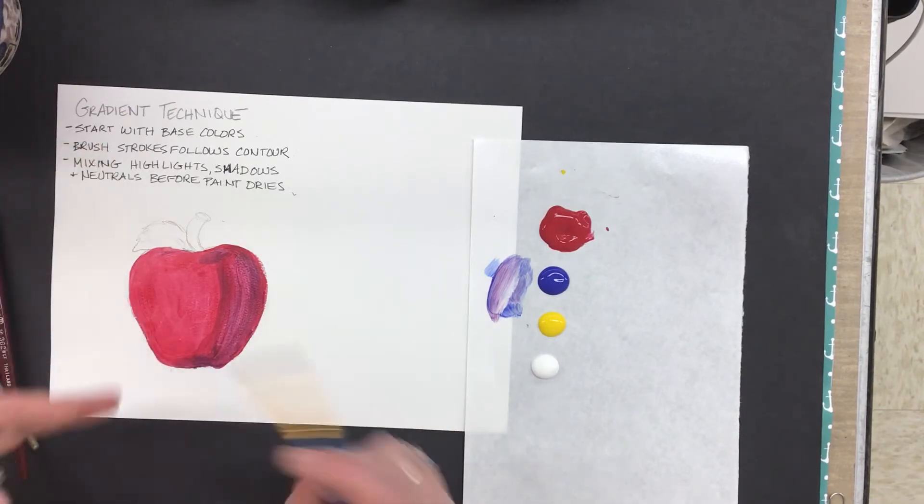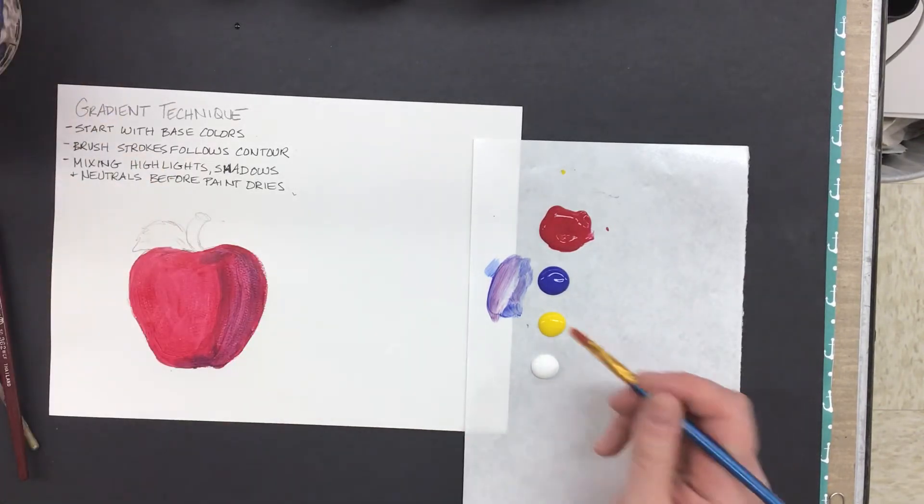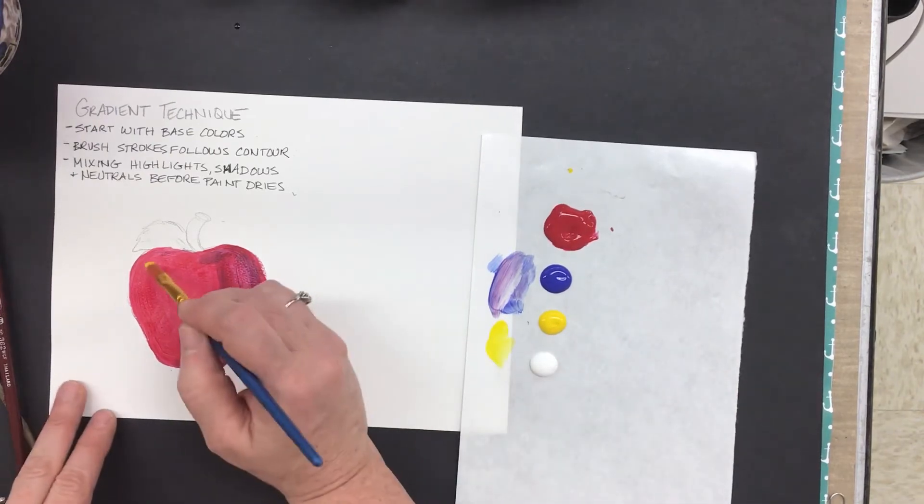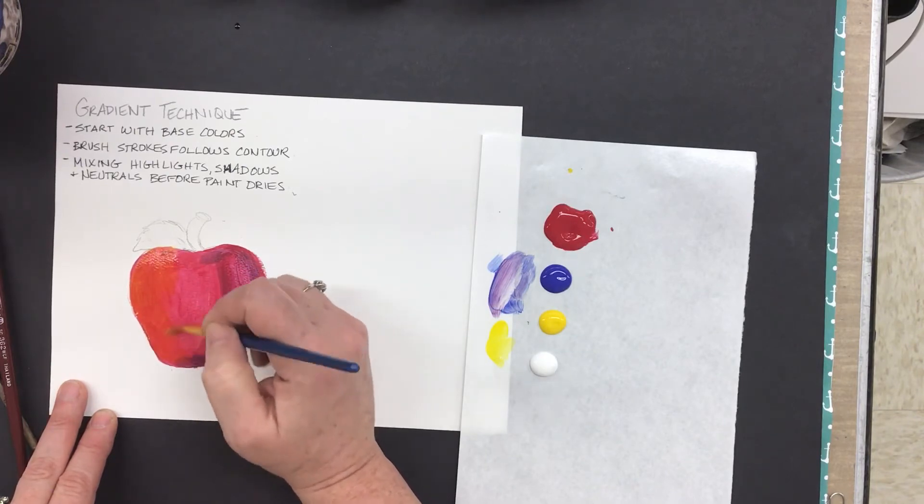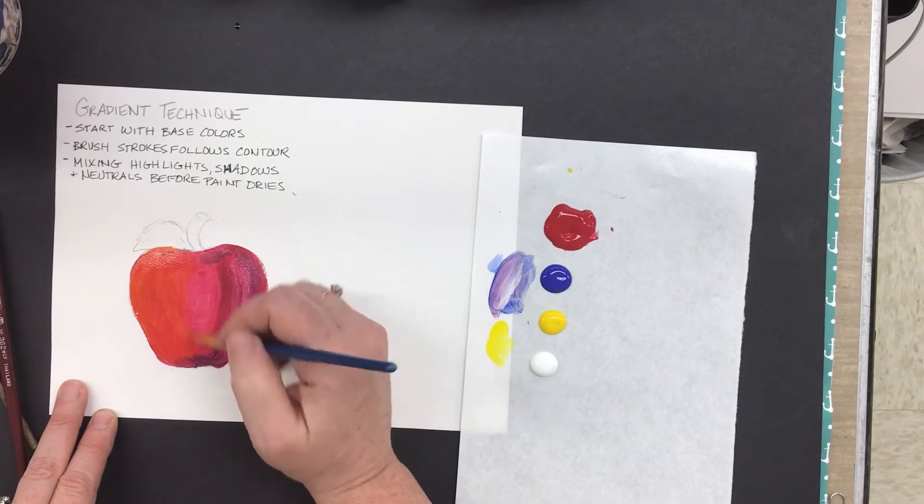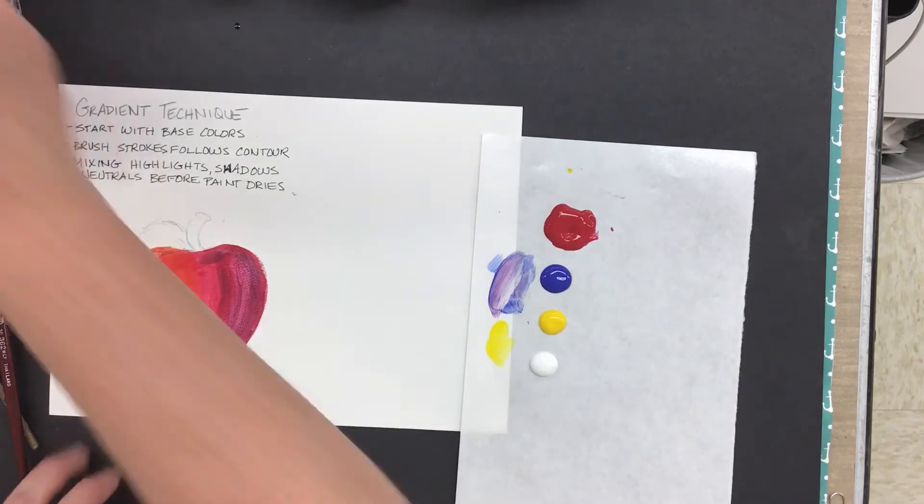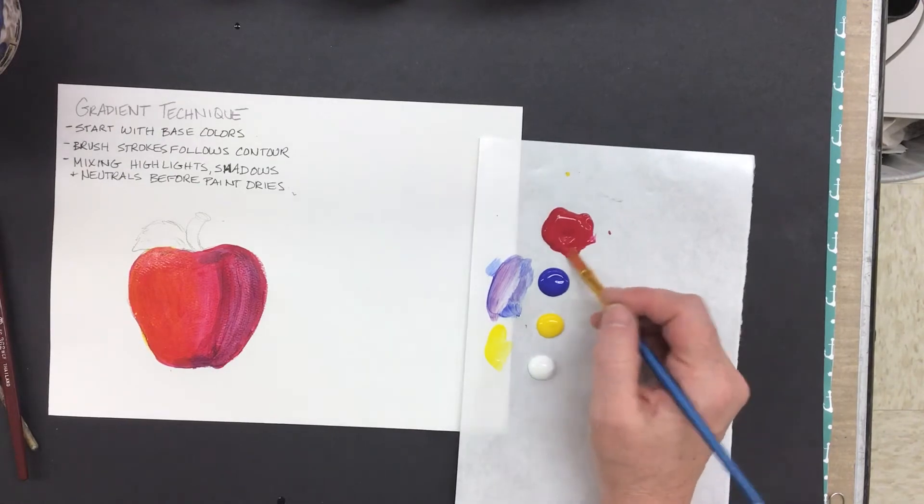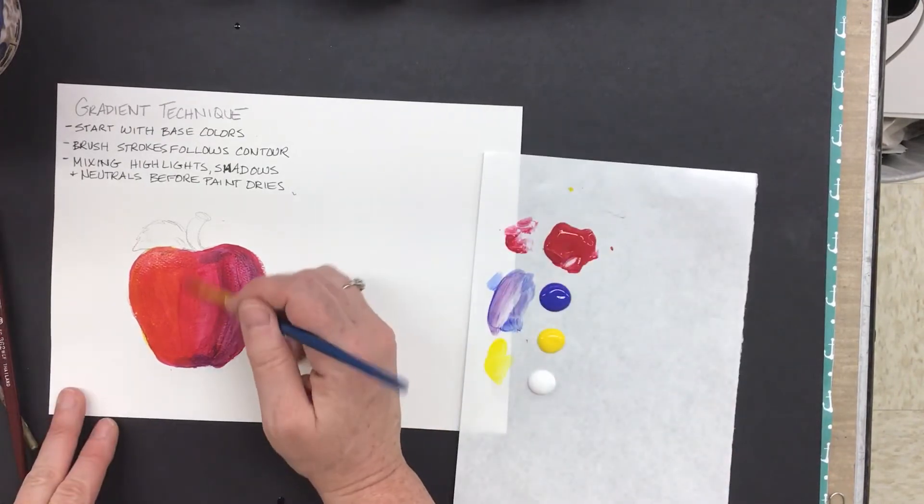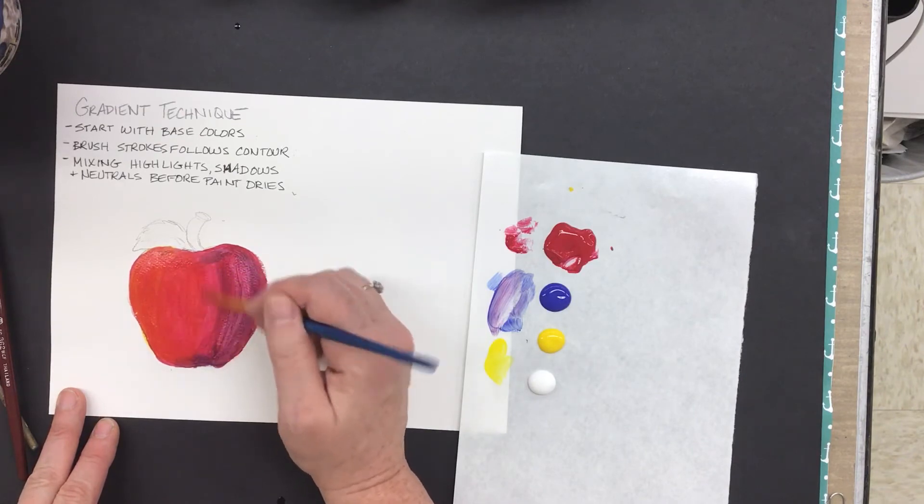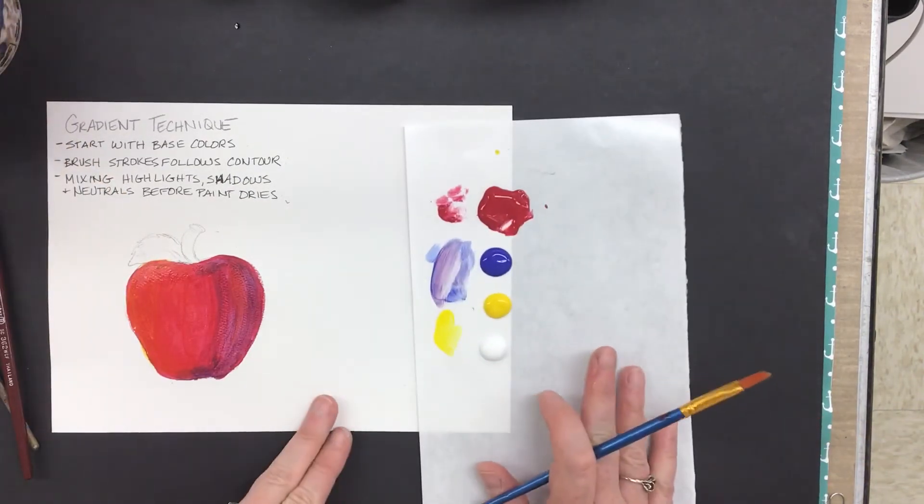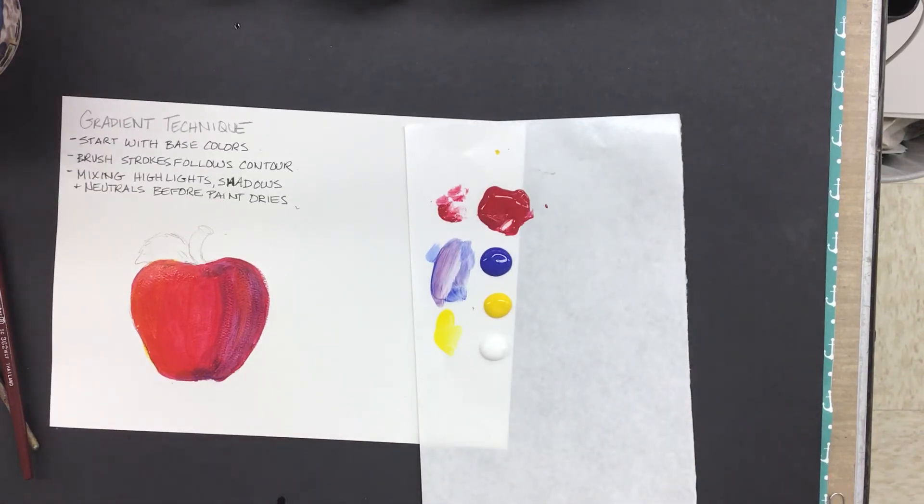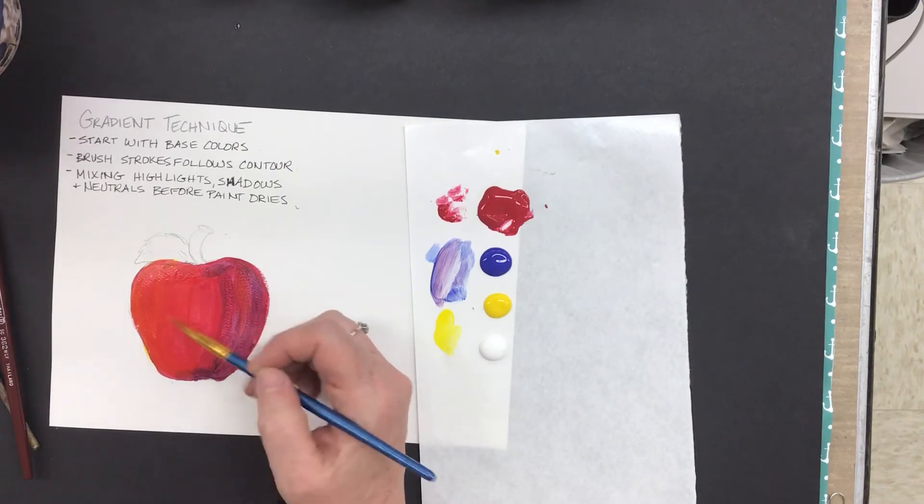that means the light source and the reflection would be over here. So I'm going to wash my brush, I'm going to pull a little bit of yellow, I'm going to do the same thing on the highlighted side. If your base color dries before you get the next color on it, add some more back in there. And it may take a couple coats.